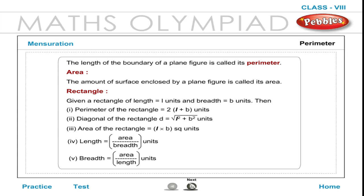4. Length is equal to Area ÷ Breadth units. 5. Breadth is equal to Area ÷ Length units.